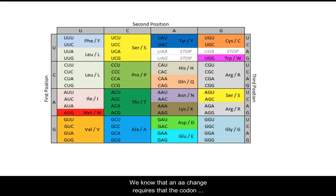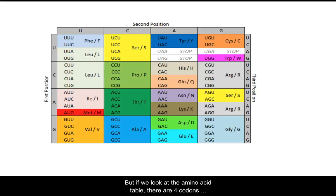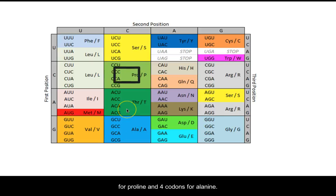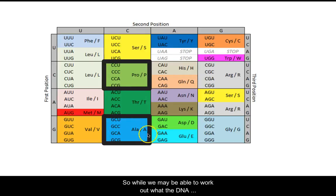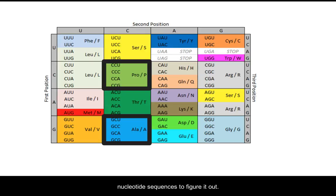We know that an amino acid change requires that the codon specifying the amino acid is changed, but if we look at the amino acid table there are four codons for proline and four codons for alanine. So while we may be able to work out what the DNA change must have been, it is easier to go back to the nucleotide sequence to figure it out.